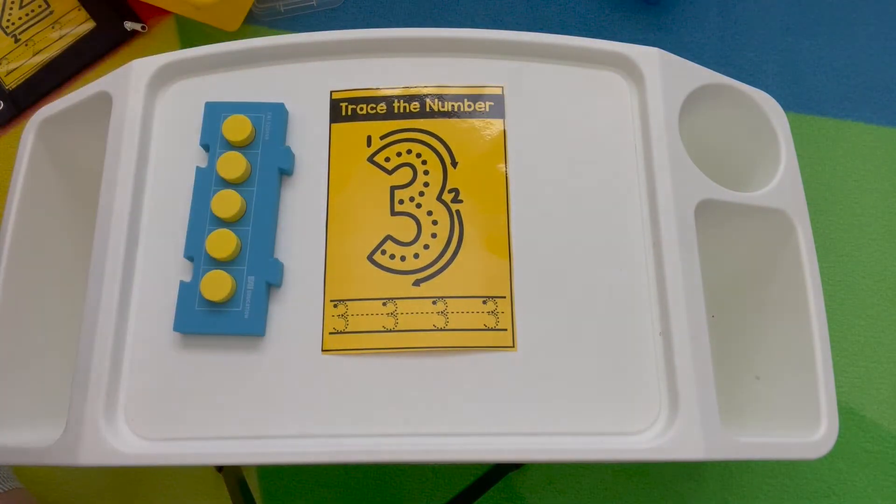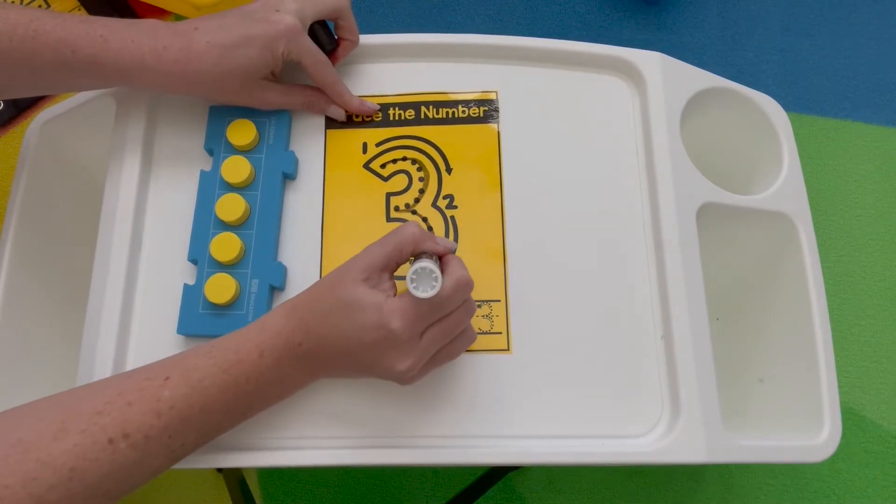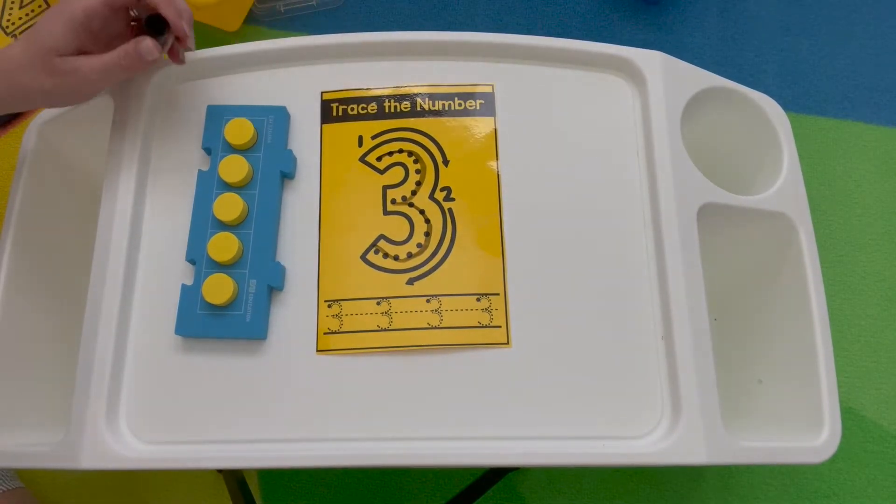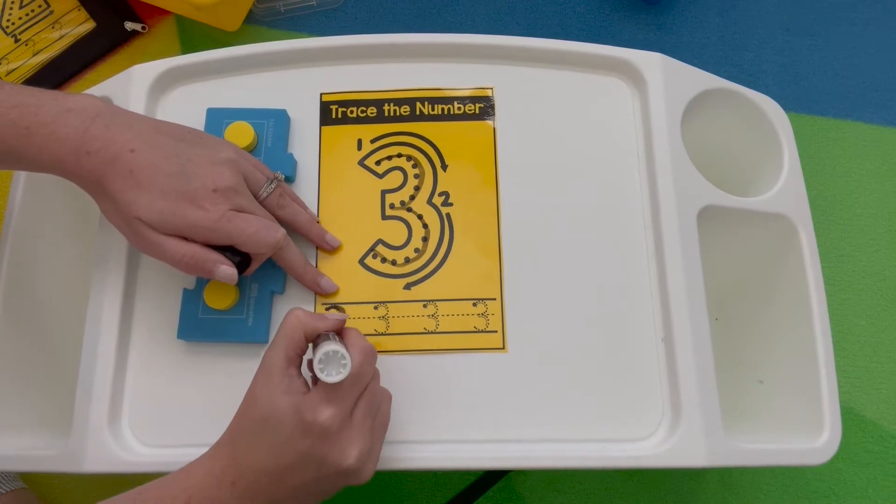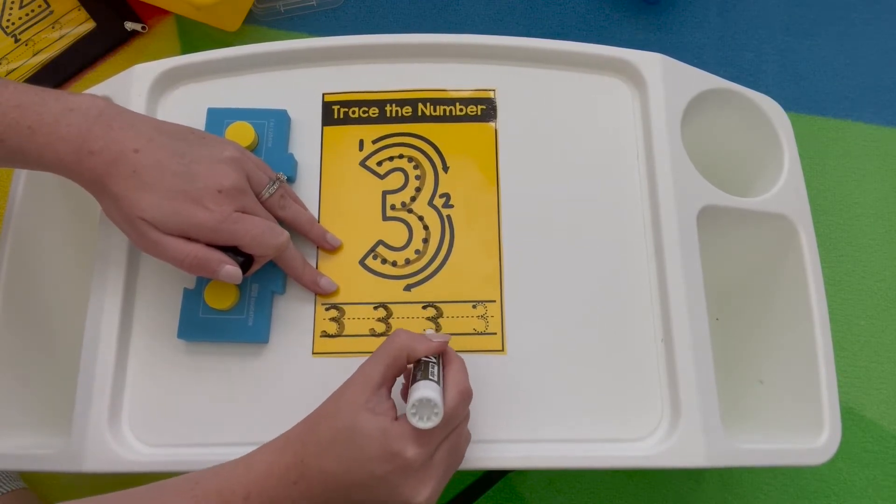So the first one you're going to go ahead and trace it around the tree, around the tree. That's the way you make a three. And they're just going to repeat that practice following those dots and their small numbers and arrows to help them know how to form it.